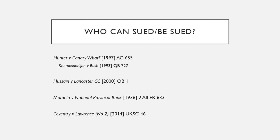Next we look at who can be sued and who can sue. In Hunter it says that in order to sue you need a right in that land. This was clearly shown in Bush, where the claimant was being harassed by her ex-boyfriend and she wasn't allowed to claim under nuisance because she had no rights in the land — the rights belonged to her parents. In Hussein, a shopkeeper subjected to racism was held by the court to be unable to sue the council; they had to sue the people causing the nuisance. In Matania you can claim against the occupier of the land, and in Coventry v Lawrence you can claim against the landlord where they authorise the nuisance either expressly or impliedly.